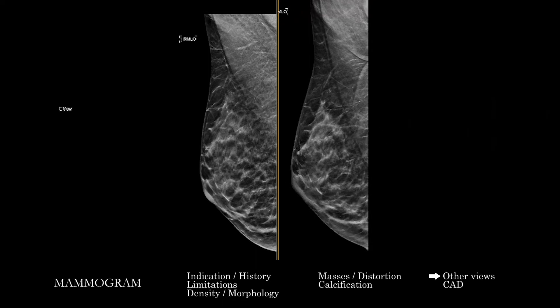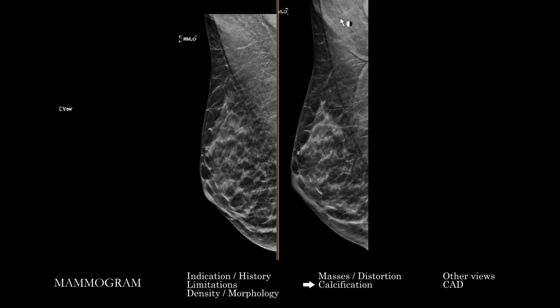Going through and looking at the 2D views and the tomosynthesis, you're looking for mass lesions, asymmetry, architectural distortion, and it can be particularly useful — especially on the tomosynthesis, whether conventional 2D views or synthesized 2D views from the tomographic images — to look specifically for calcifications, going through in a similar sort of search pattern.